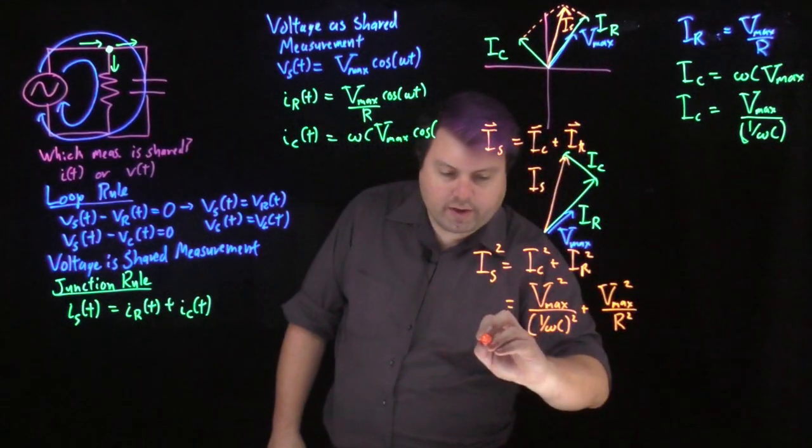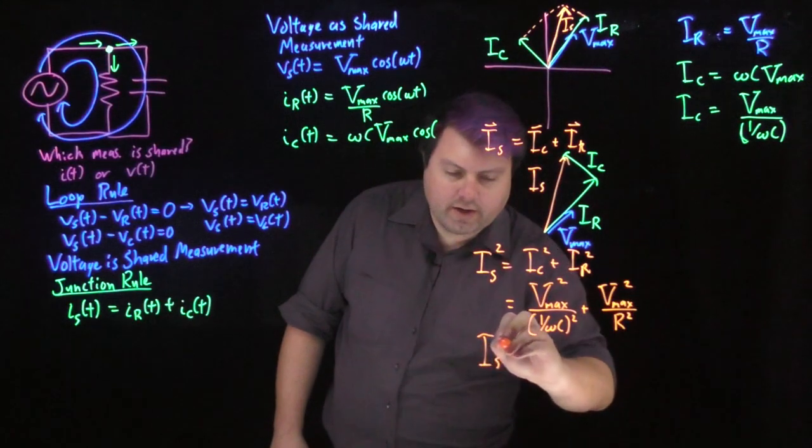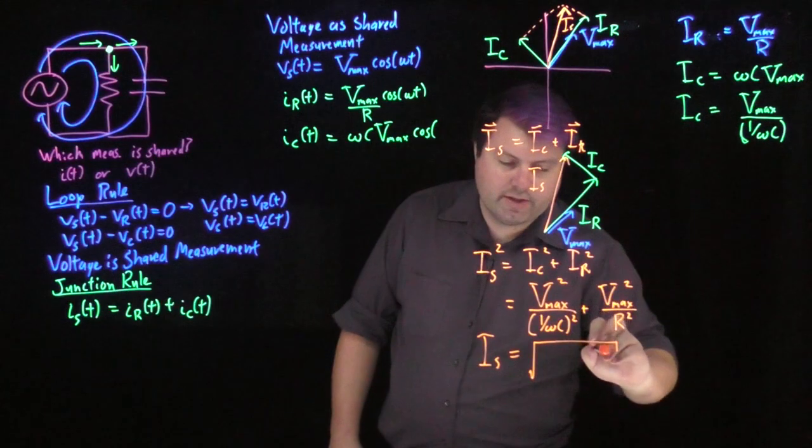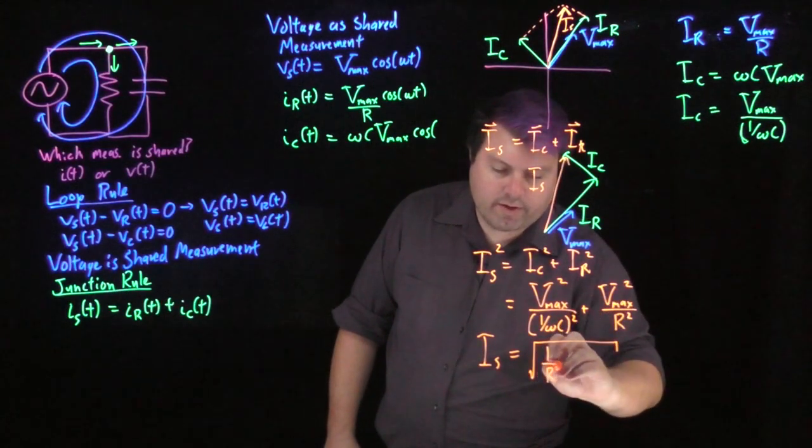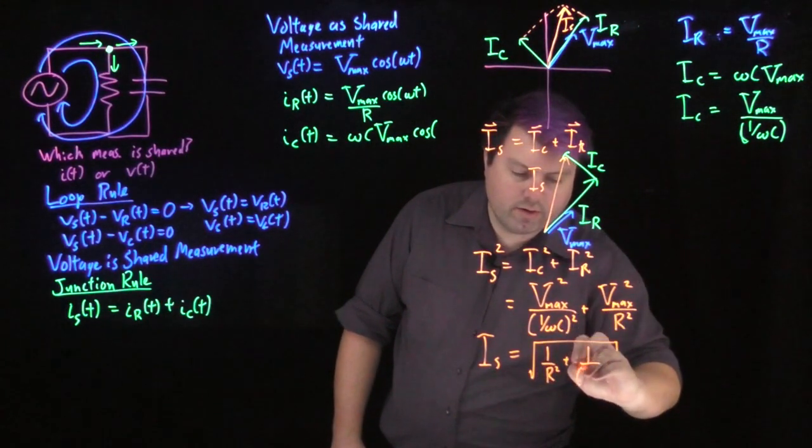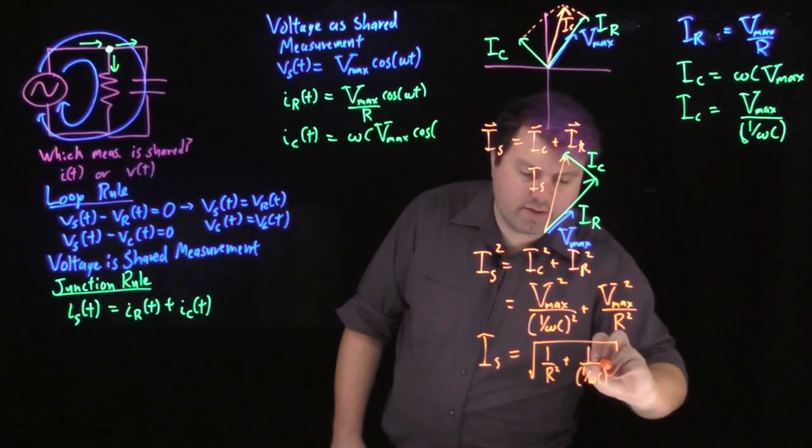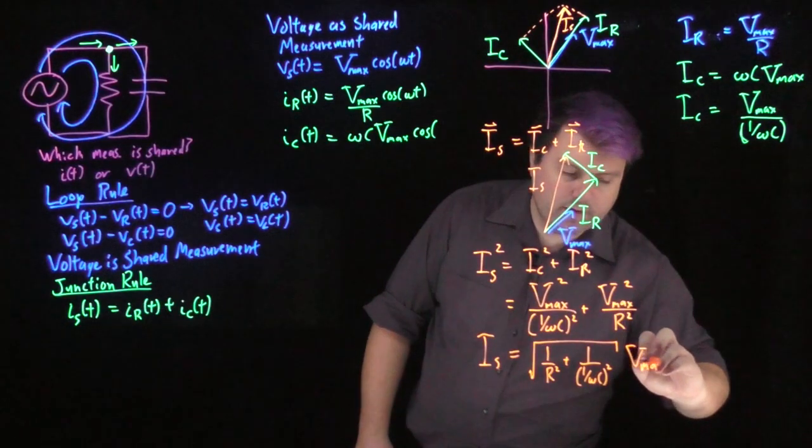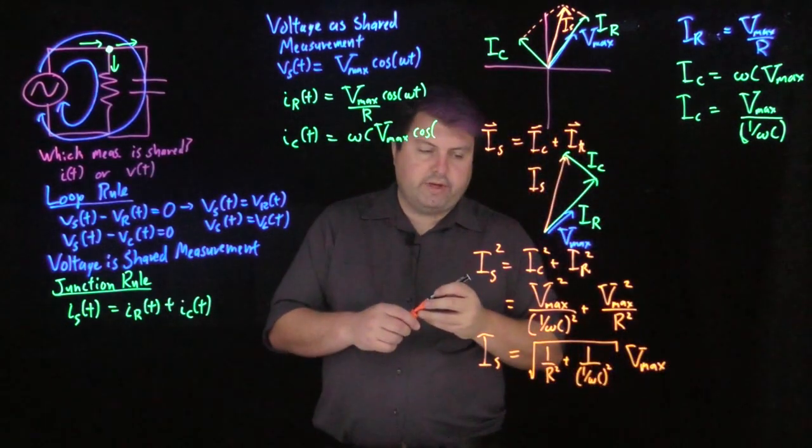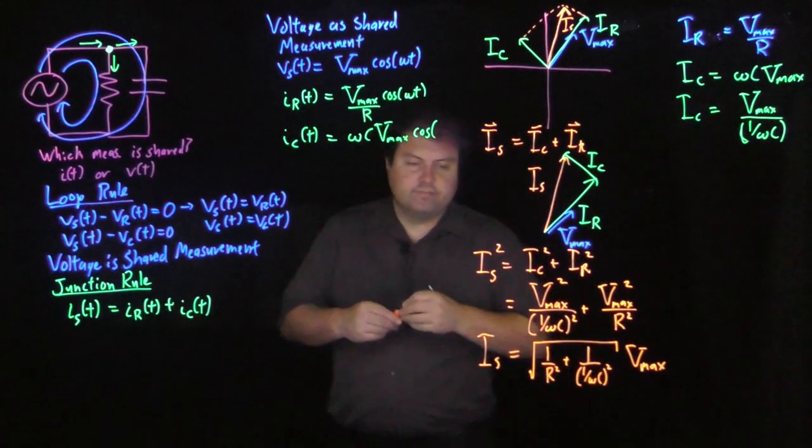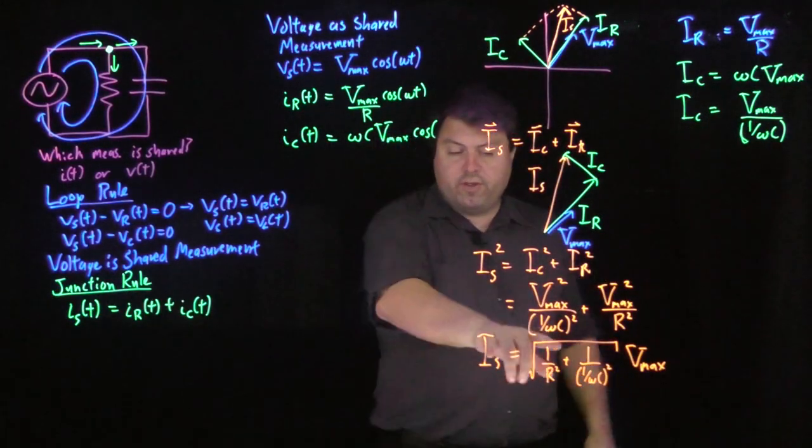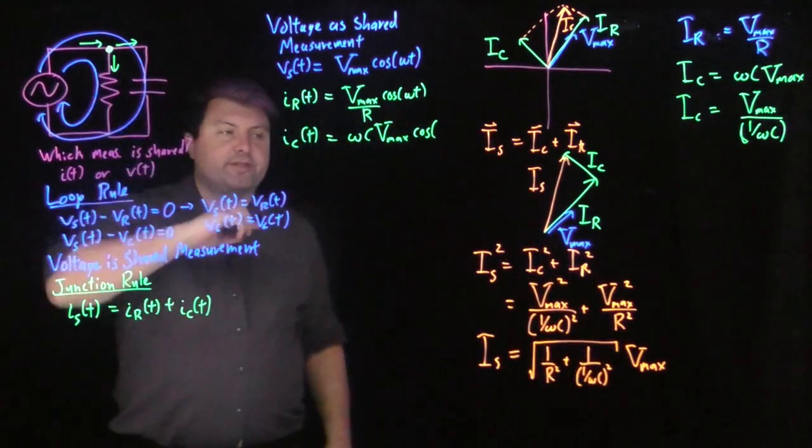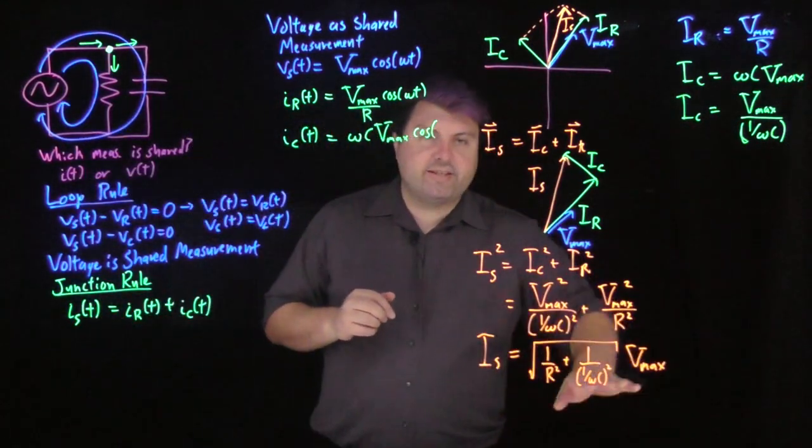So we can then look at this and see that our source, if we take the derivative, or the square root of both sides, we get one over r squared plus one over one divided by omega c quantity squared times v max. So this is very similar to how parallel resistors added when we added resistors in parallel. So that's a really nice sign.